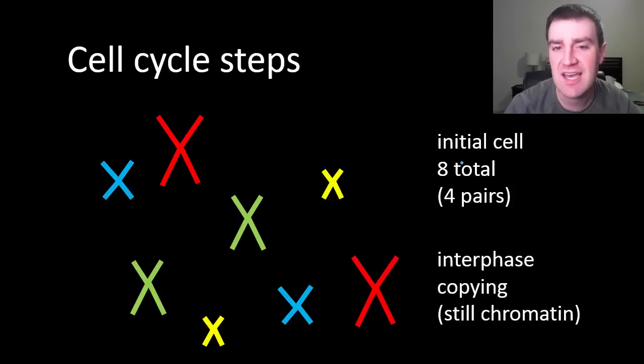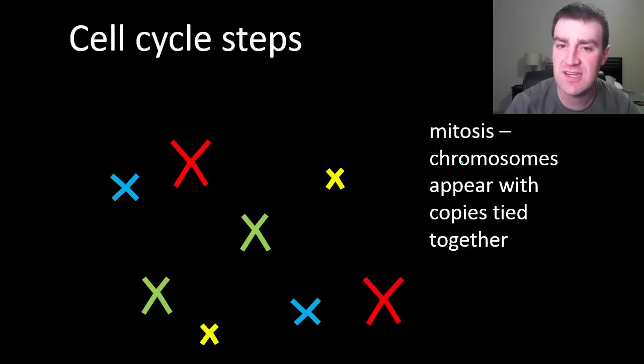Early mitosis is where we actually start to see the chromosomes in that condensed X form because all the DNA got packed up. So technically here's where we first see them.